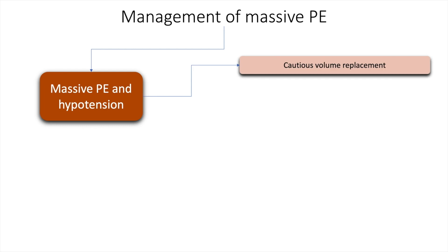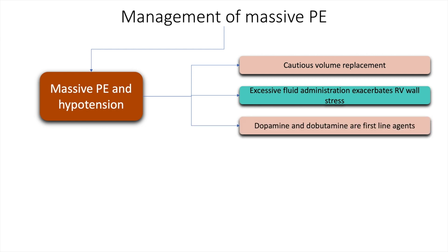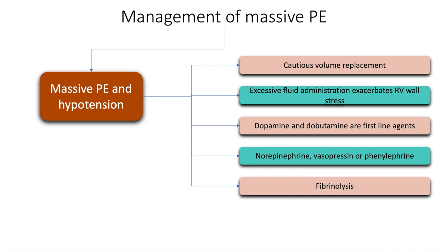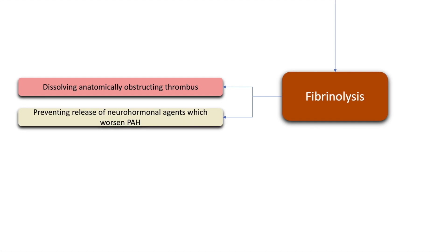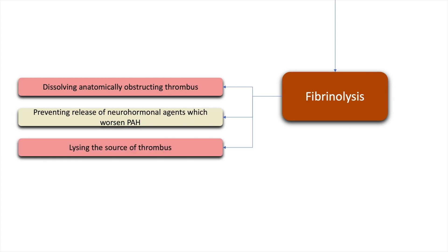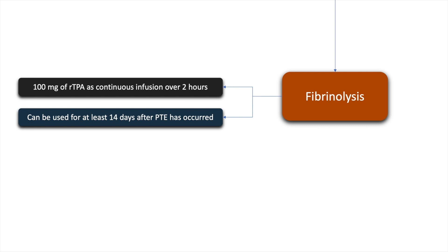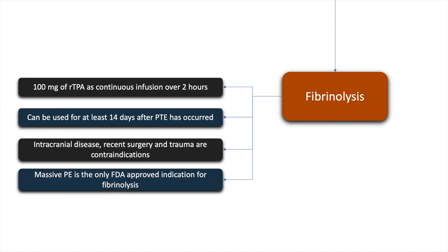Management of massive pulmonary embolism includes cautious volume replacement, as excessive fluid administration exacerbates right ventricular wall stress. Dopamine and dobutamine are first-line agents; norepinephrine, vasopressin, and phenylephrine are second-line agents. Fibrinolysis must be undertaken for massive PE to dissolve the obstructing thrombus, prevent release of neurohormonal agents worsening pulmonary arterial hypertension, and lyse the source thrombus. 100 mg of recombinant tissue plasminogen activator as a continuous infusion over two hours is given and can be used up to 14 days after the PTE. Intracranial disease, recent surgery, and trauma are contraindications. Massive pulmonary embolism is the only FDA-approved indication for fibrinolysis in PTE.